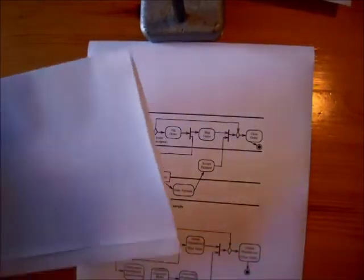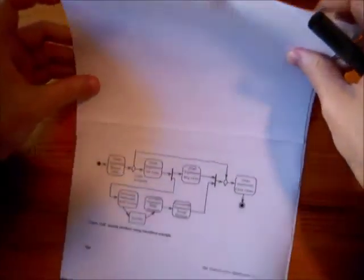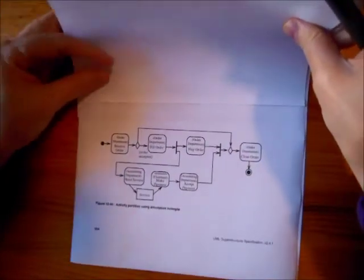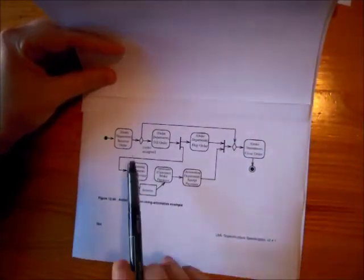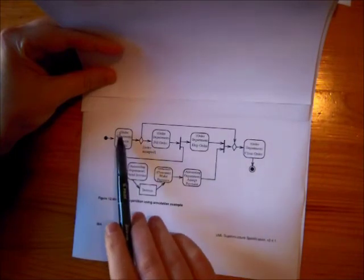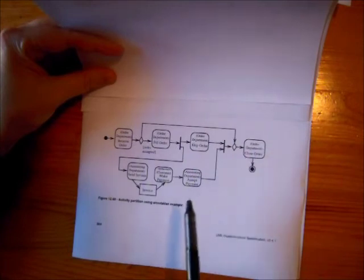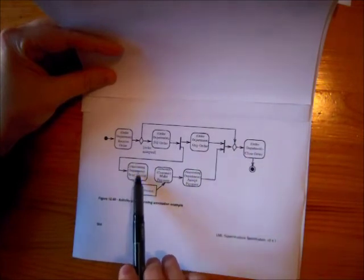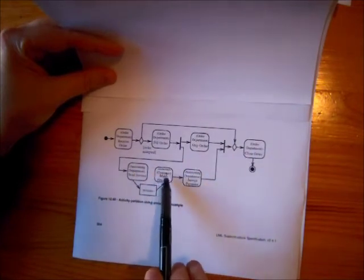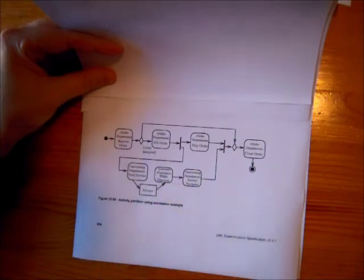Here's an alternative way of showing the same information. We've got the same activities going on, but instead of putting them in swim lanes, they've been labelled: order department, accounting department, and customer — with the invoice object shown going from one activity to another. Just an alternative way of showing the same thing.